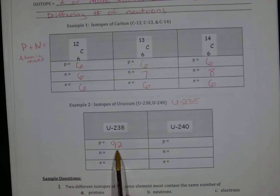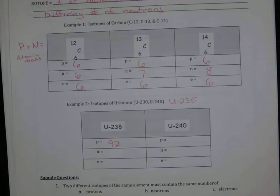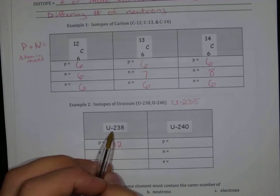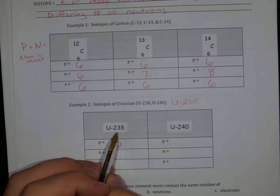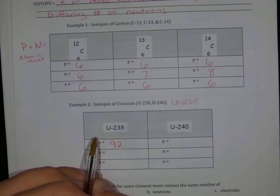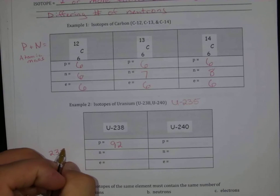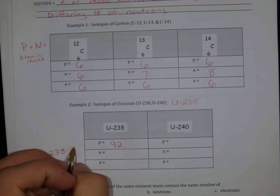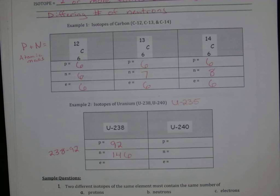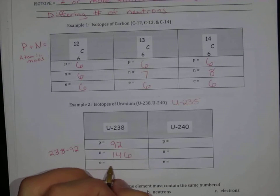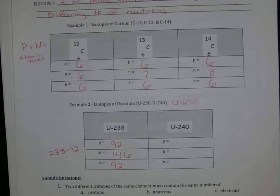There's always going to be 92 protons if we have a uranium atom. But our 238 here is the atomic mass of that uranium. It tells me the mass of that isotope. So 238 minus 92 is equal to 146. I have 146 neutrons in this uranium-238 isotope. Finally, my electrons, I'm going to have 92 electrons to balance out my 92 protons.